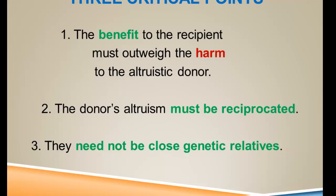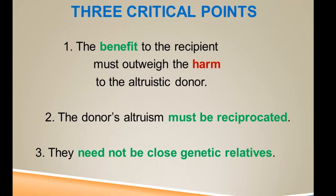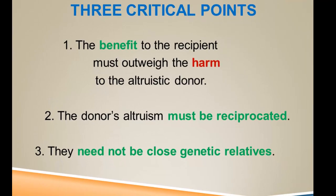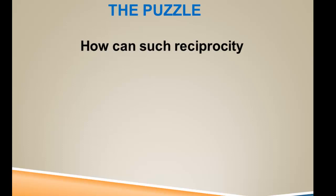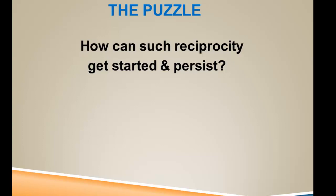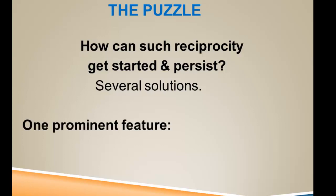Indeed, Trivers addressed what's called symbiosis between different species. Reciprocal altruism gives us a way for altruism to evolve without Hamilton's requirement for close genetic relatedness. The puzzle is how such reciprocity can ever get started, and once it gets started how it can persist. Several solutions have been offered, and what they share is the need for repeated interactions.